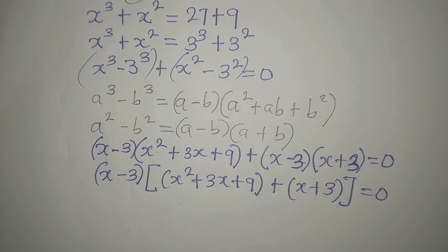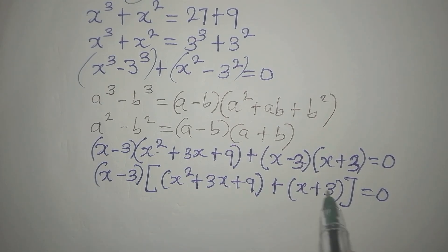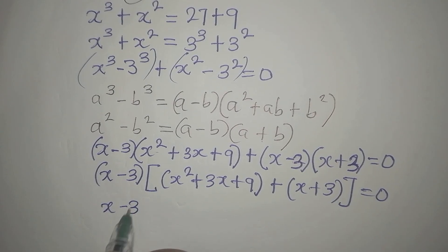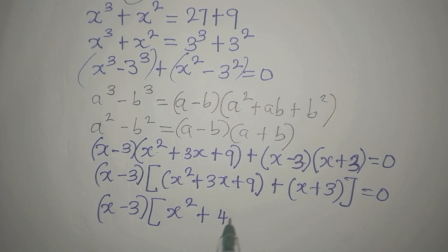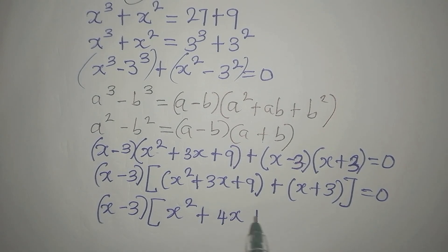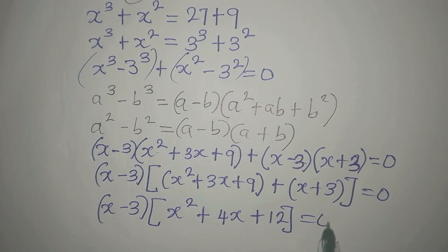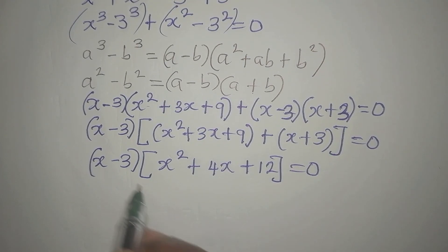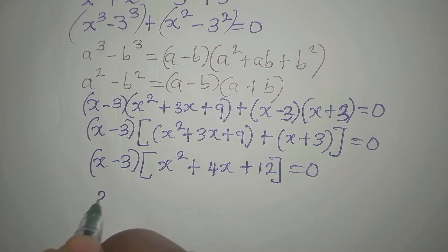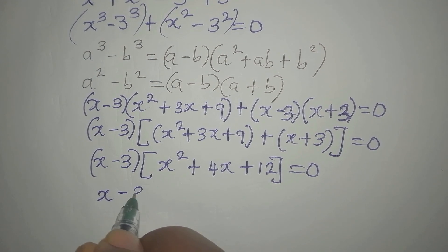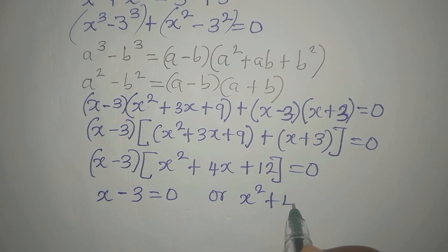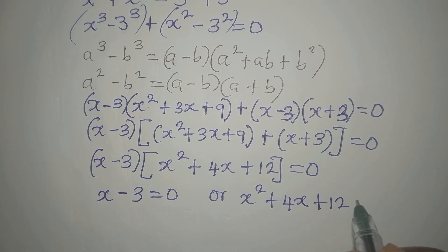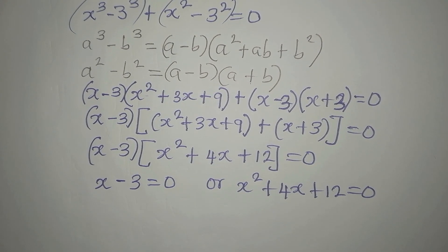Now to continue, we open this bracket. So we have x minus 3, then inside: x squared plus 3x plus x gives 4x, and 9 plus 3 gives 12. So we get x minus 3 times x squared plus 4x plus 12, and everything equals 0. Since these two factors multiply to give 0, it implies x minus 3 equals 0, or x squared plus 4x plus 12 equals 0.